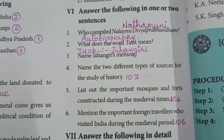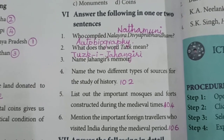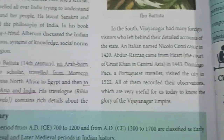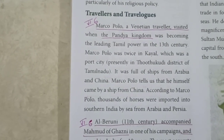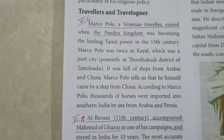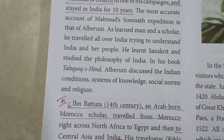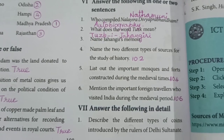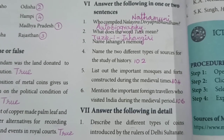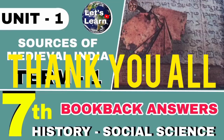Next question: Mention the important foreign travellers who visited India during the medieval period. The answer is on page number 106 under Travellers and Travelogs. The important travellers are Marco Polo, Al-Baruni, and Ibn Battuta. We are marking History, first lesson for 7th standard in Term 1. We shall meet again in the next video. Thank you all.